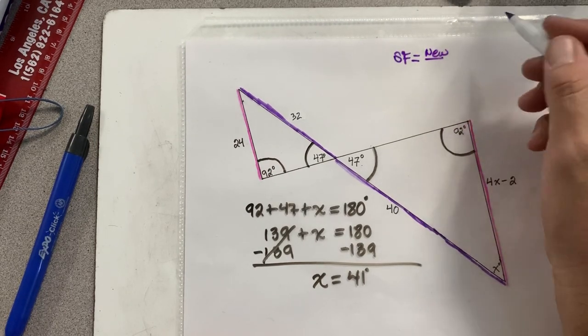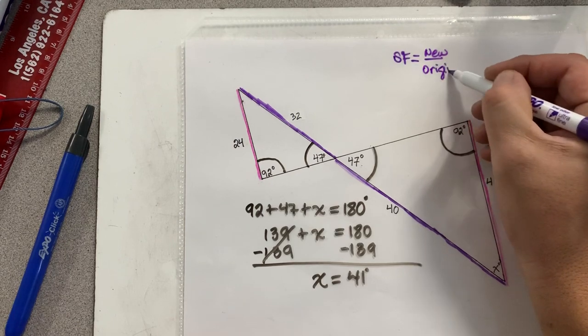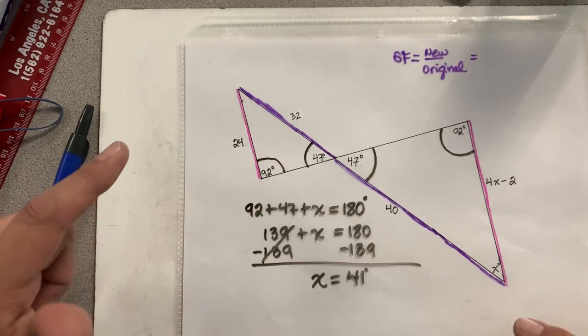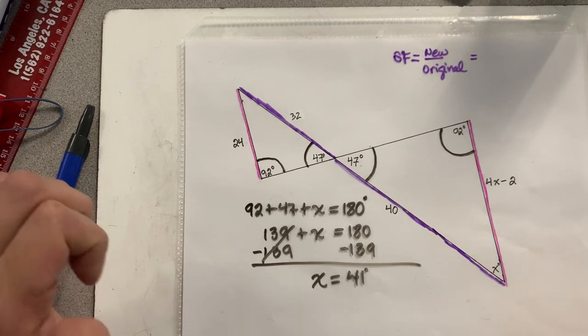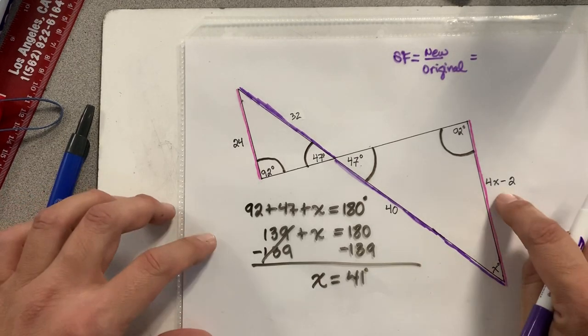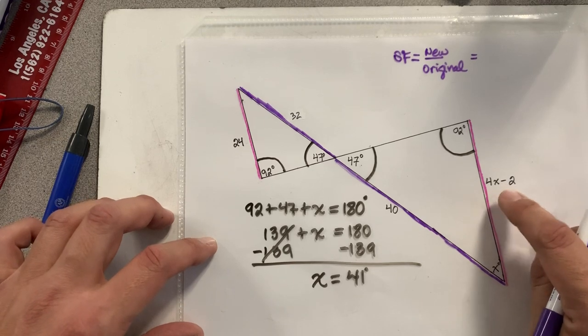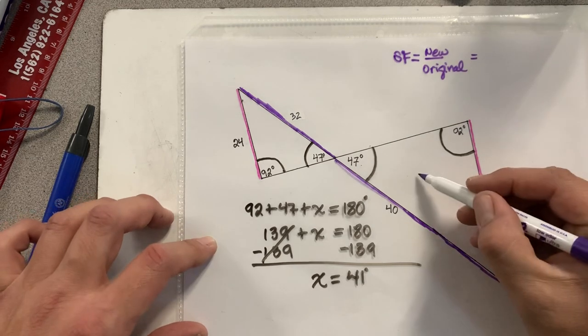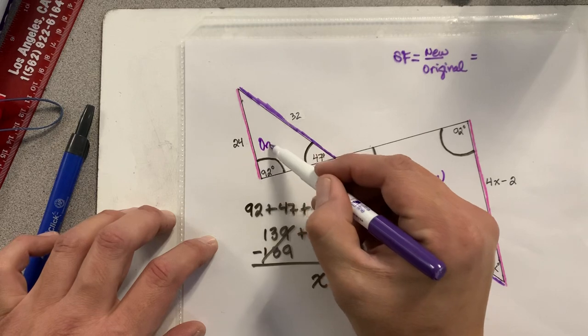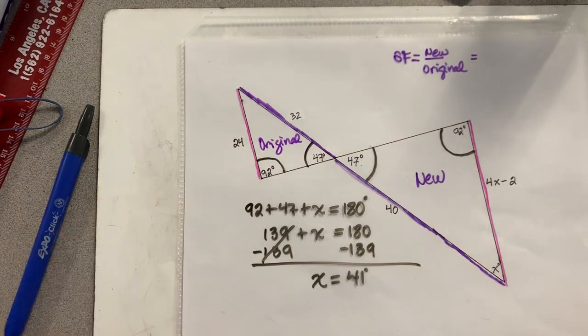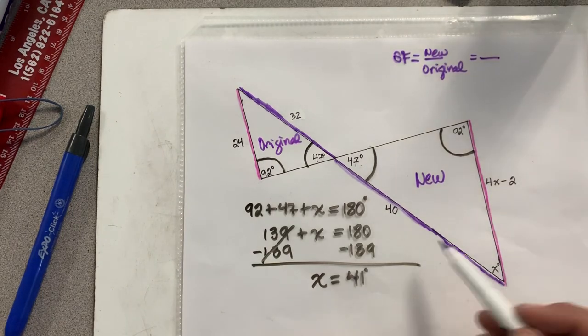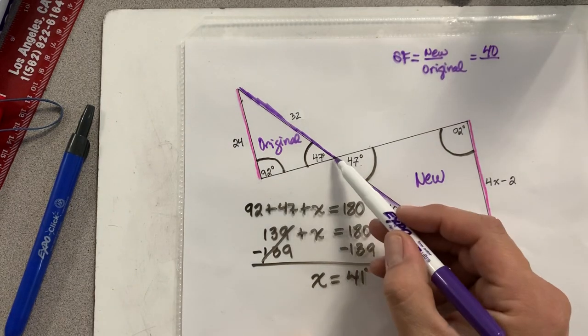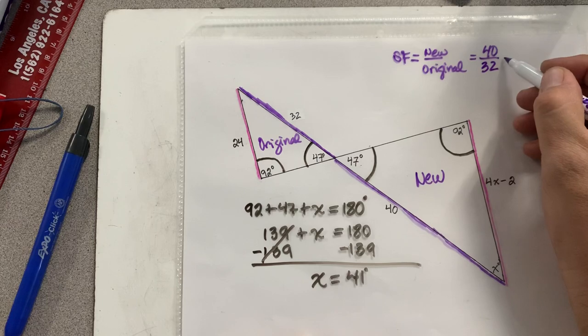So I'm going to find the scale factor. Scale factor is going to be new over original. Now is when we have to decide which side is the new and which side is the original. What you want is you want the new side to be the side that has the variable. So if this has the variable, then this shape is the new. This shape is the original. Which means the new side that I'm going to be using is 40. The original side that I'm going to be using is 32 because they correspond. They're corresponding sides.